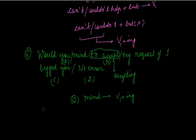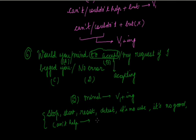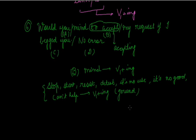Some more verbs that take V1+ing or gerund: stop, start, resist, detest, and phrases like 'it's no use', 'it's no good', and 'can't help' / 'couldn't help' without 'but'. These verbs and phrases will always take gerund with them.